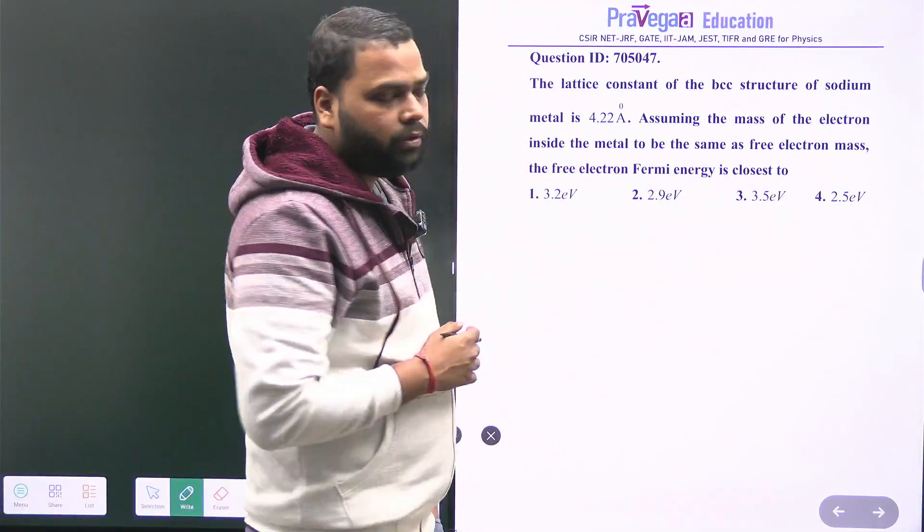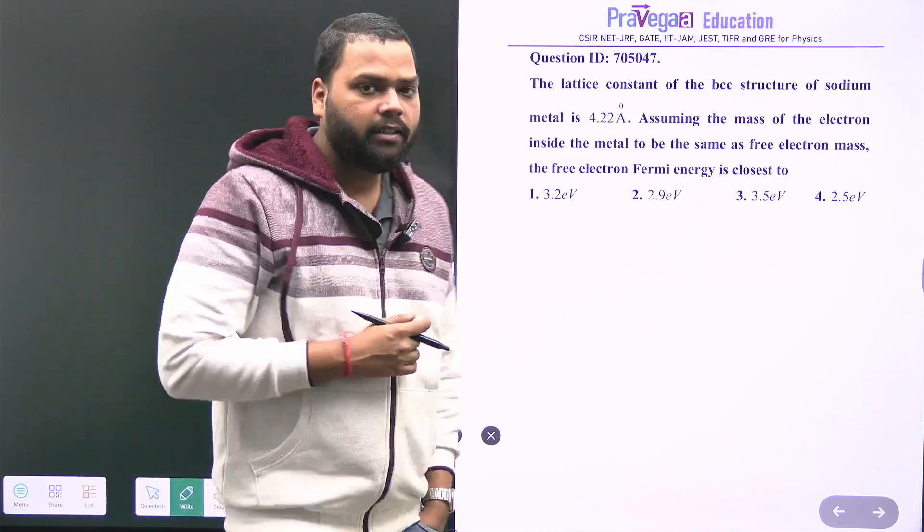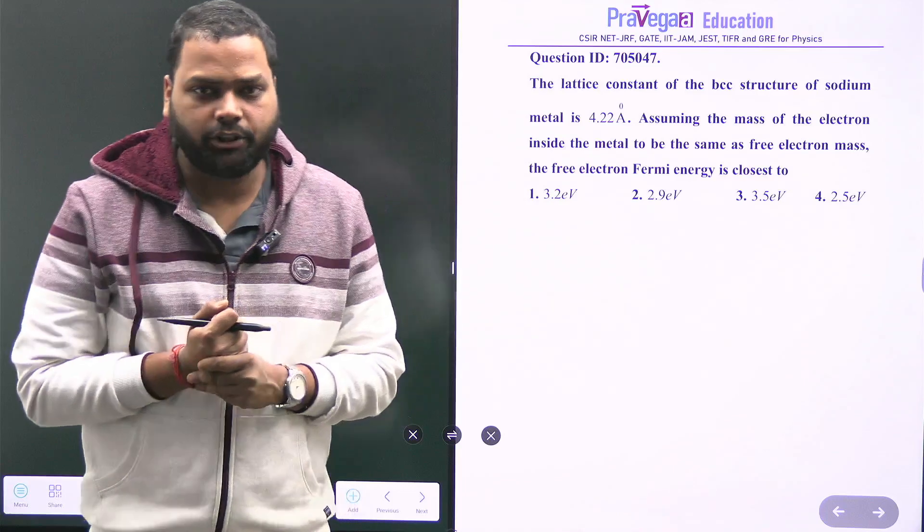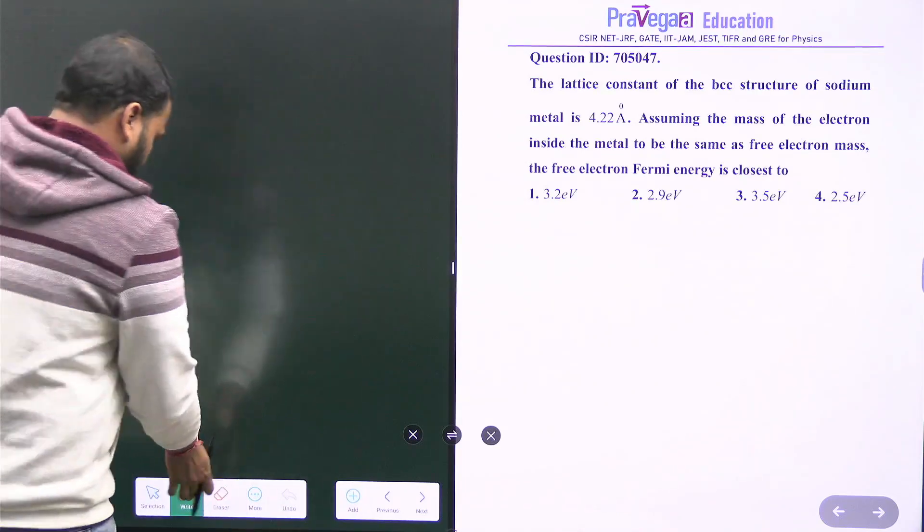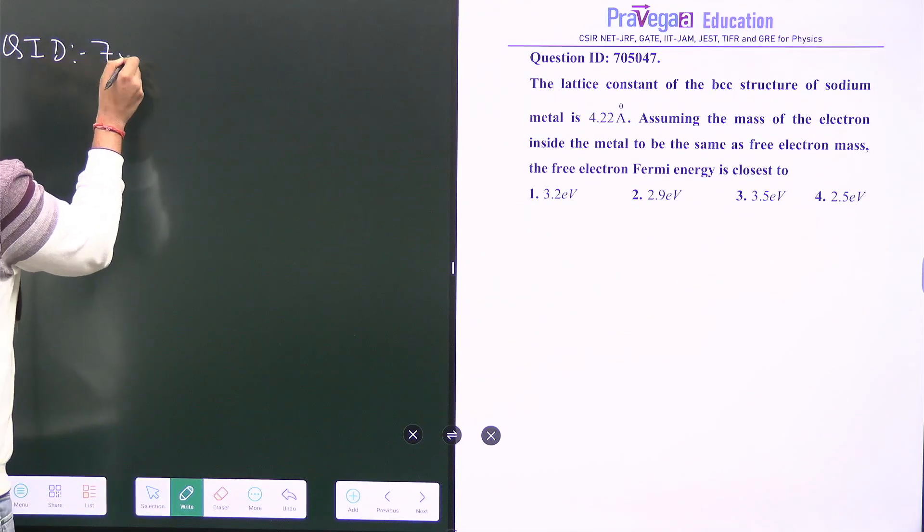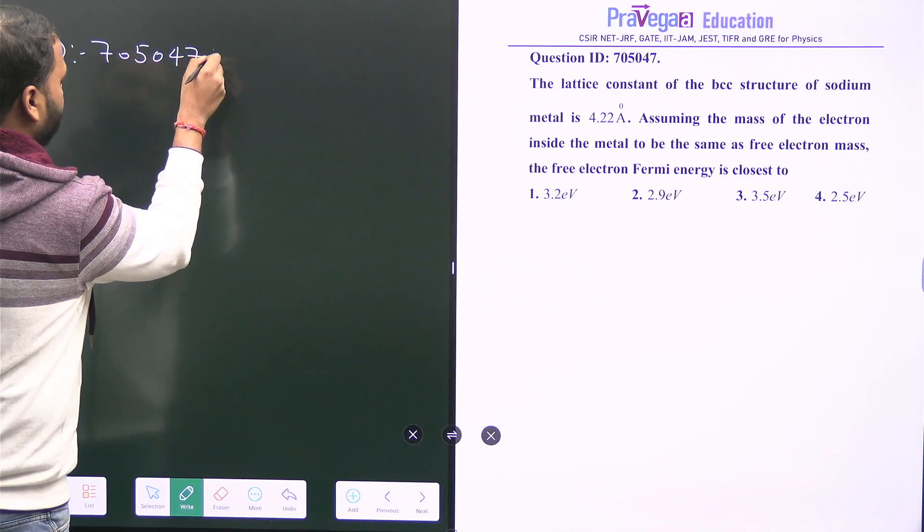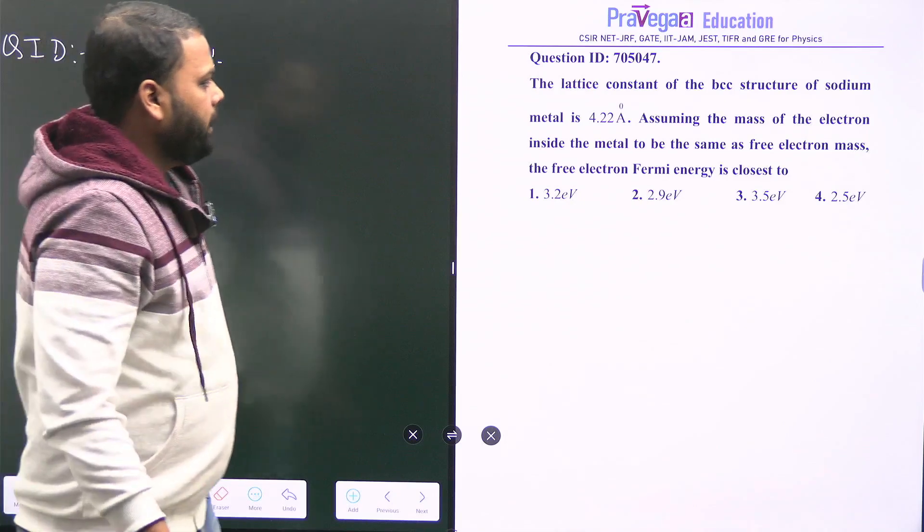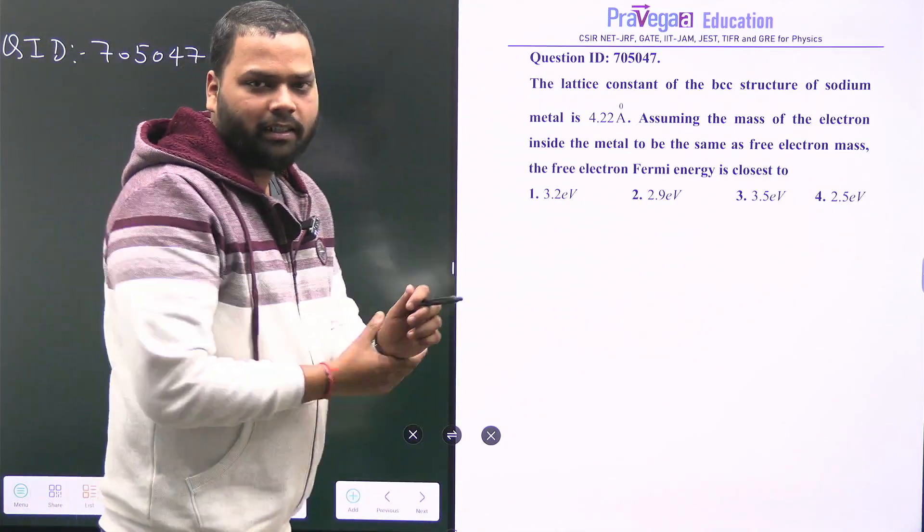In this video I'm going to discuss a question from the CSIR NET December 2023 examination. The question ID is 705047. This is a very easy question from the class notes.